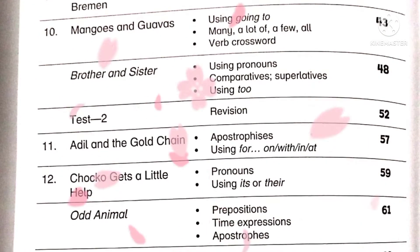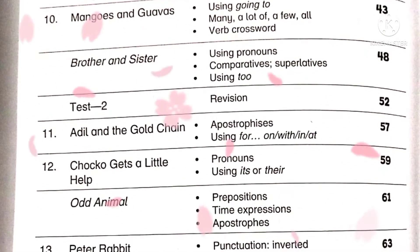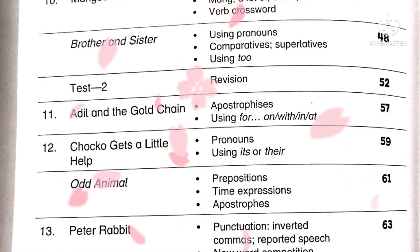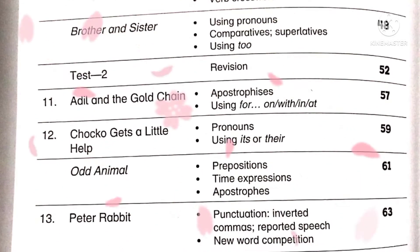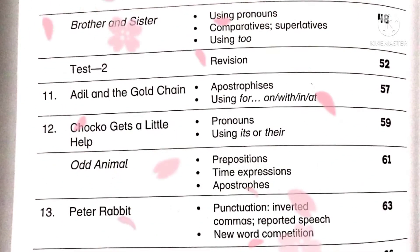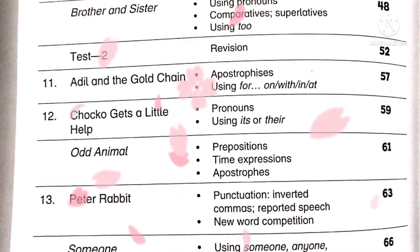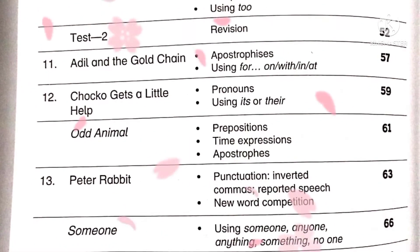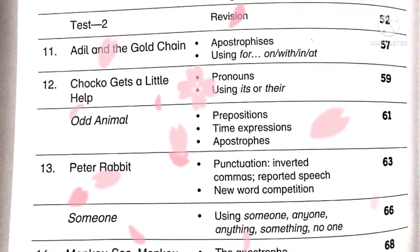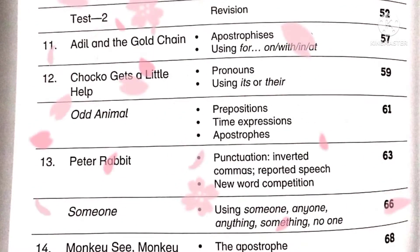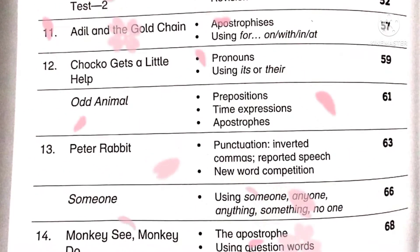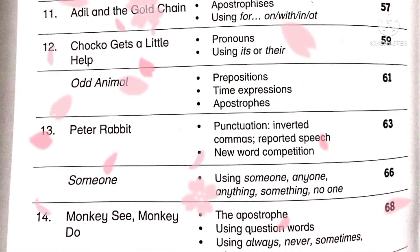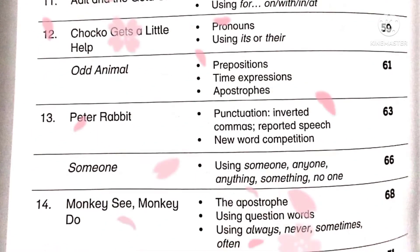This is unit number eleven, 'Adil and the Gold Chain.' We will see apostrophes and using prepositions 'for,' 'on,' 'with,' 'in,' and 'what.' Next is unit number twelve, 'Chokho Gets a Little Help.' The grammatical concepts will be pronouns using 'its' or 'their.' Next is 'Odd Animal,' which covers prepositions, time expressions, and apostrophes.